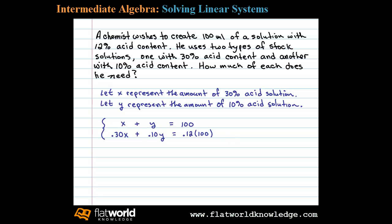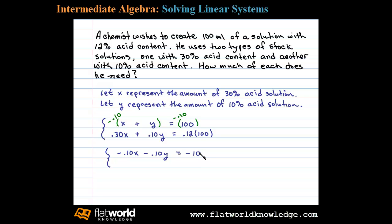We can solve this linear system any way we want. In this case, I'll use the elimination method. To eliminate the variable Y, we multiply both sides of the first equation by negative 0.10, giving us the equivalent equation: -0.10X - 0.10Y = -10. The second equation remains: 0.30X + 0.10Y = 12.